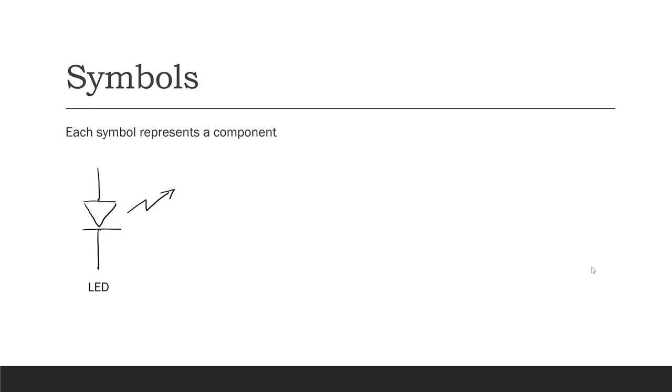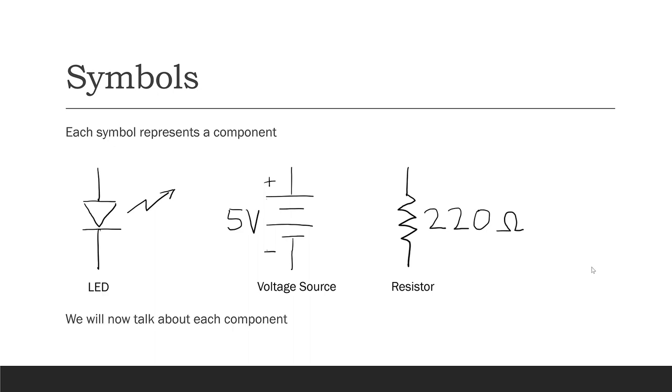For example, this symbol represents an LED, this symbol represents a voltage source, and this symbol represents a resistor. We're going to talk about each component in turn to understand a little bit more about them and how they work in this circuit.